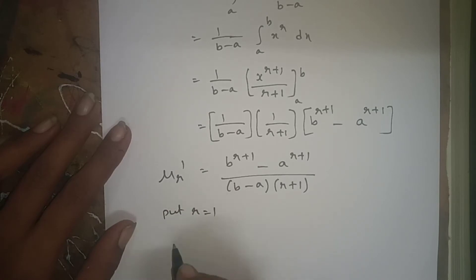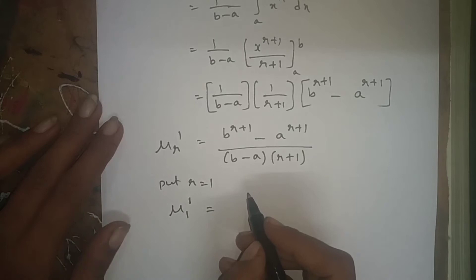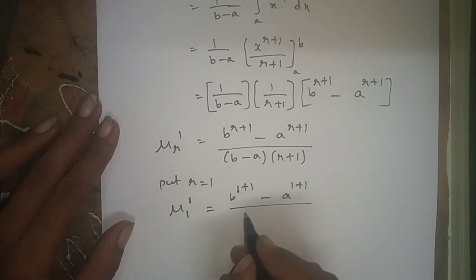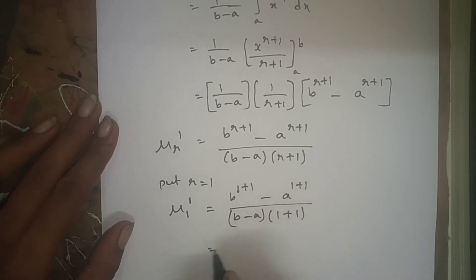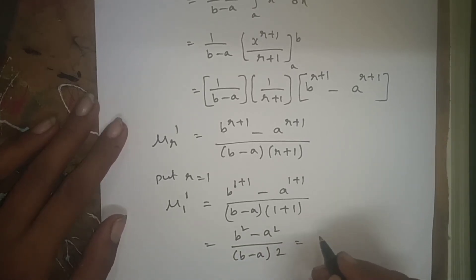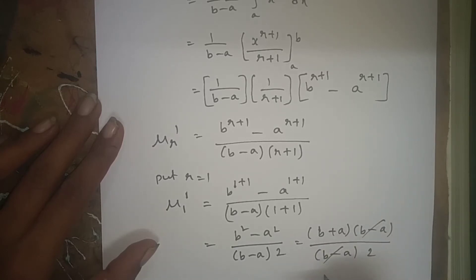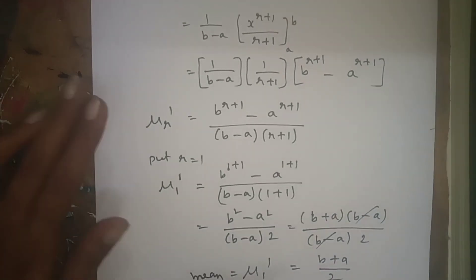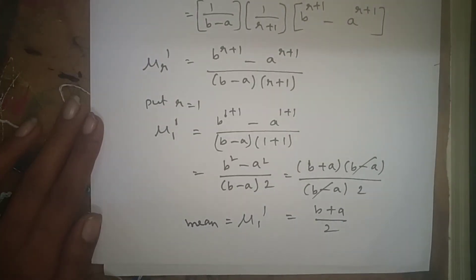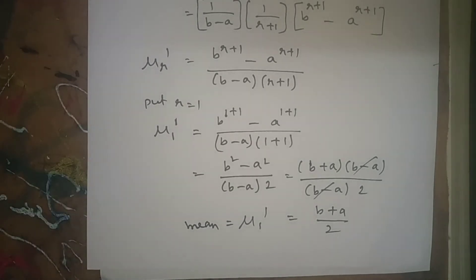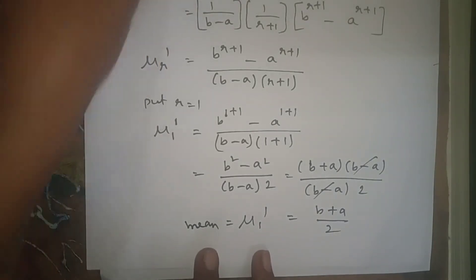By putting r = 1: μ'_1 = [b^2 − a^2] / [(b − a) · 2]. Since b² − a² = (b + a)(b − a), the (b − a) cancels, giving μ'_1 = (b + a)/2. Therefore the mean of the uniform distribution is (a + b)/2.